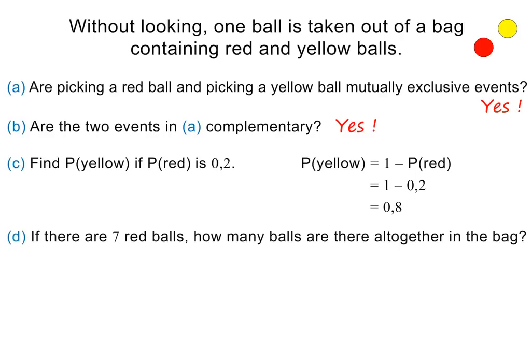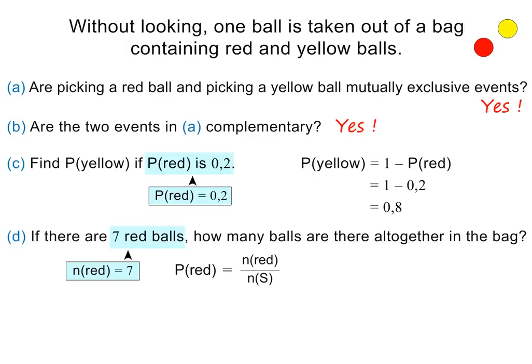In part D, we are asked how many balls there are altogether if there are 7 red balls in the bag. We know that the probability of red is 0.2, and we are given that N(red) equals 7. Using the formula for calculating the probability of red and substituting the given values, we can find N(S), which is the total number of balls in the bag. Using a bit of algebra, we get that there are 35 balls in the bag. Please pause the lesson to check my working.